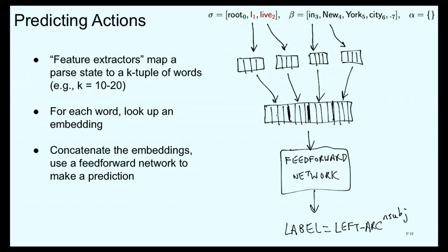To give a little more intuition: typically you might have on the order of 20 to 50 different features — 20 to 50 words, parts of speech, and various other pieces of information about the parse state. Each of those might have a 100-dimensional vector representing them, so after concatenation you might end up with a vector of a few thousand dimensions. The feedforward network, empirically, can be quite small — maybe one or two layers with a few hundred neurons per layer.